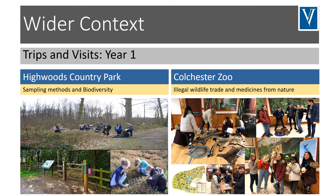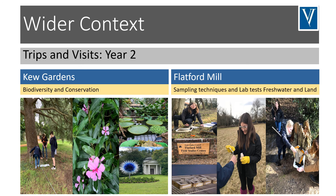A big part of environmental science is getting out into the natural environment to learn, and you have trips and visits in both the first and second year of the course. In year one, the main trips are to Highwoods Country Park, where you get to design your own project and practice collecting data and sampling methods, and also to Colchester Zoo, where you get talks from experts about the illegal wildlife trade and medicines from nature — both sessions are interactive with hands-on activities. In the second year, we have trips to Kew Gardens, where you get talks from experts on biodiversity and conservation, as well as a two-day trip to Flatford Mill, where you get to design a mini research project and investigate both in a river and in grassland.